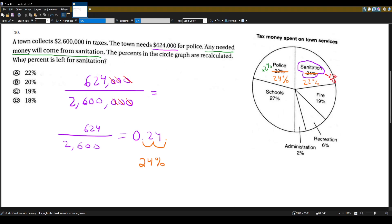So the question asks, what percent is left for sanitation? And that's answer choice A, 22%.